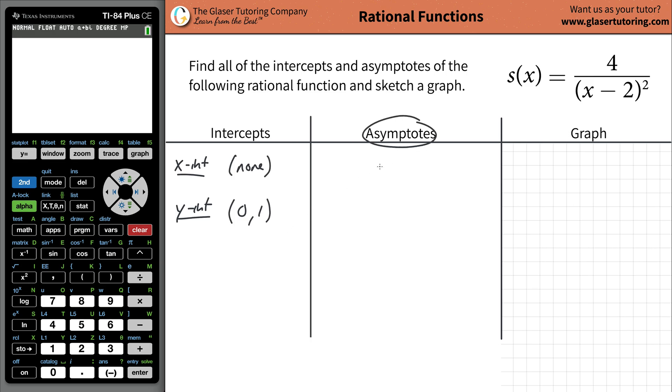Next, we look at the asymptotes. We have our vertical and horizontal asymptotes. So let's first work with the vertical asymptotes. What you want to do is make sure that your function is fully factored, which it is. And you want to cancel any factors in the numerator and denominator if possible first. In this case, there's nothing to cancel.